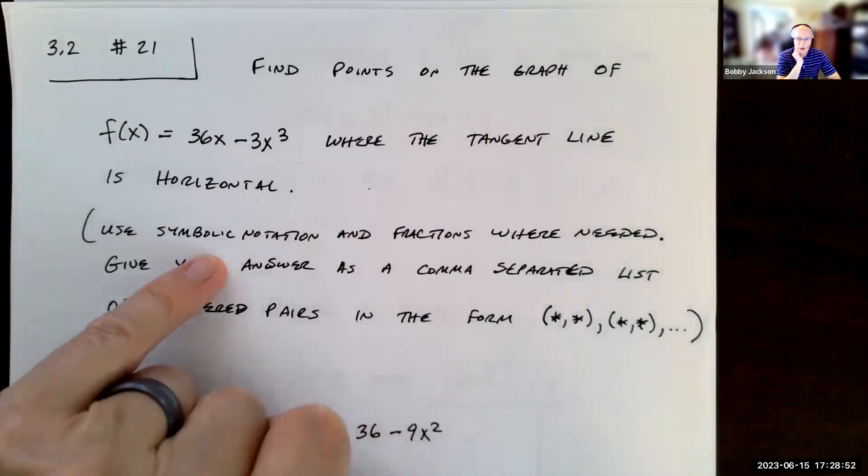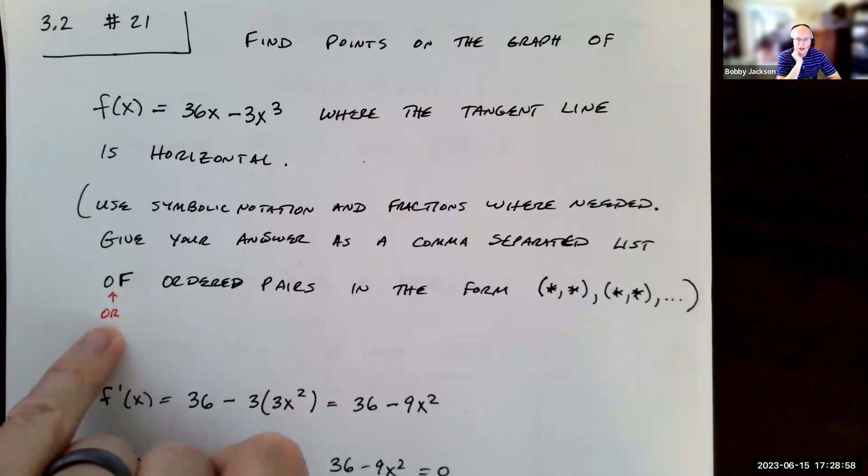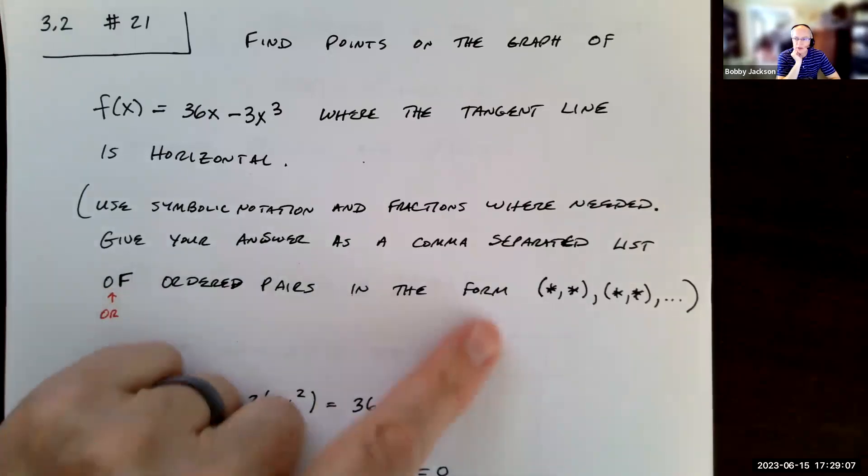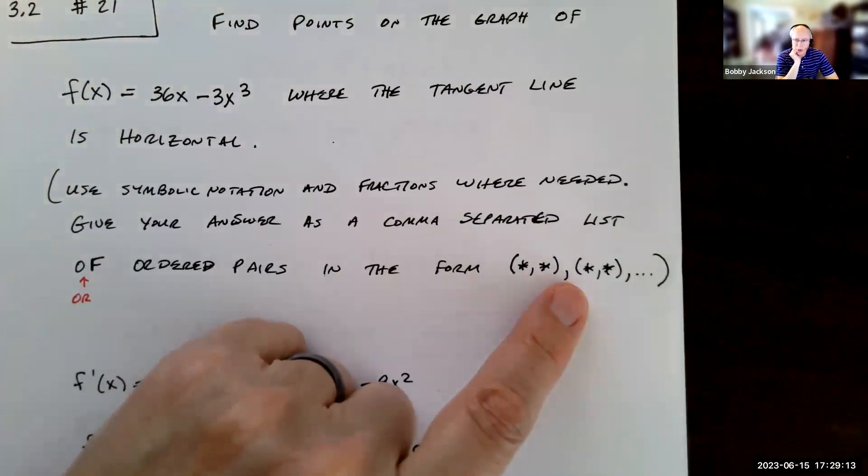And parenthetically, they write here: use symbolic notation and fractions where needed. Give your answer as a comma-separated list. They actually have 'or' here - I don't know if it's a typo. It should be 'of': give your answer as a comma-separated list of ordered pairs in this form. So I'll explain what that is. We're just going to write ordered pairs separated by commas for each point.